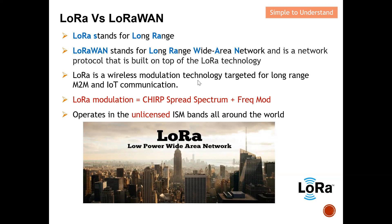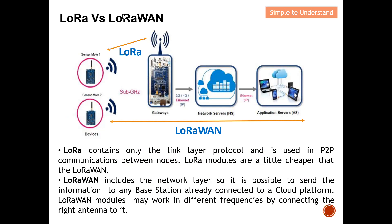LoRaWAN is a wireless modulation technology mainly targeted for long-range machine-to-machine communication and IoT communication. LoRa can achieve long range; however, the throughput — the amount of data we can send — will be very small. LoRa modulation is essentially chirp spread spectrum plus frequency modulation. Since LoRa operates in the unlicensed ISM band, it can be used all over the world. LoRa actually contains only the link layer protocol.